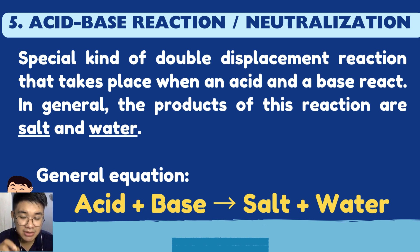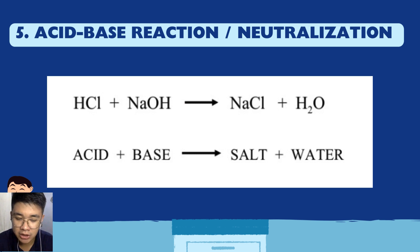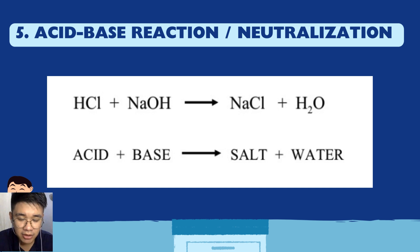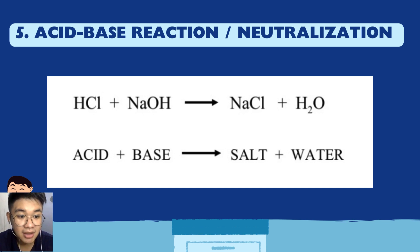When an acid and a base react, the products are always a salt and water. So you should always expect H2O (water) and a salt as your products. Example: HCl (hydrochloric acid, your acid) + NaOH (sodium hydroxide, your base) → NaCl (sodium chloride, table salt) + H2O (water).